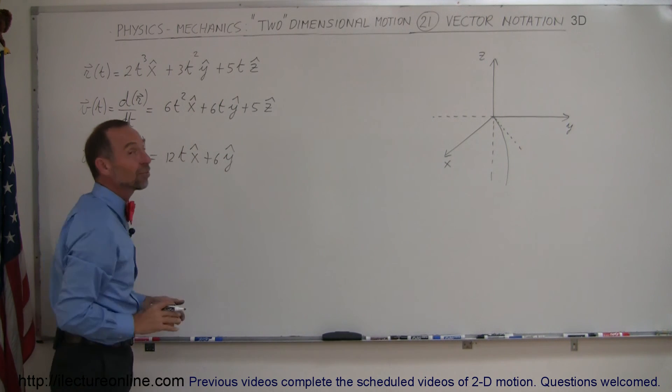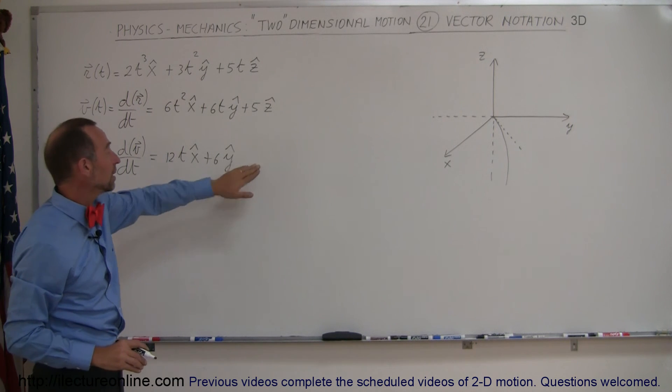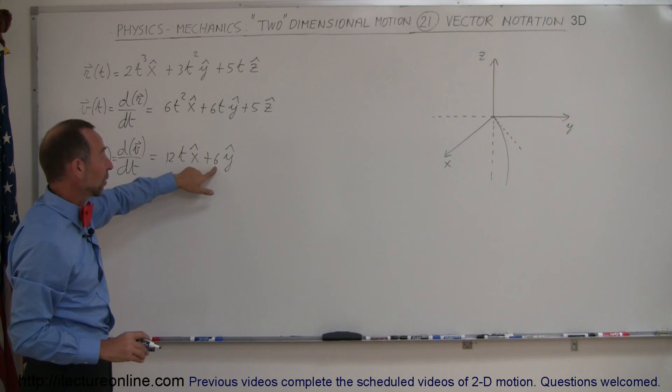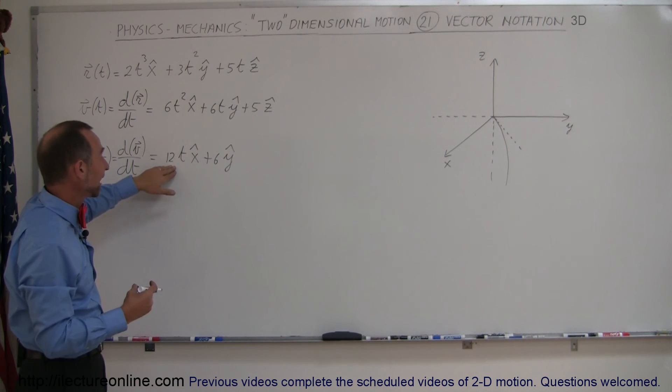This is equal to 12t in the x direction plus 6 in the y direction. This represents acceleration. Notice in the z direction there's no acceleration, constant speed. In the y direction there's acceleration of 6 meters per second squared.